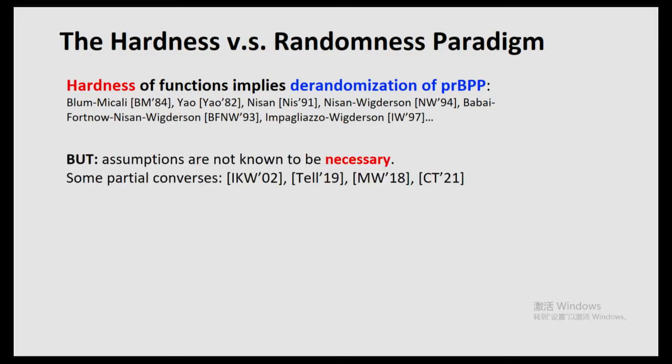However, despite years of research, the assumptions under which we obtain BPP equals P are not known to be necessary. So there is still a seemingly large gap between what we know to be sufficient to imply derandomization and what is known to be implied by derandomization. There are some works making progress towards closing this gap, including Impagliazzo-Kabanets-Wigderson 2002, Ettel 2019, Murray-Williams 2018, and Chen and Tell.